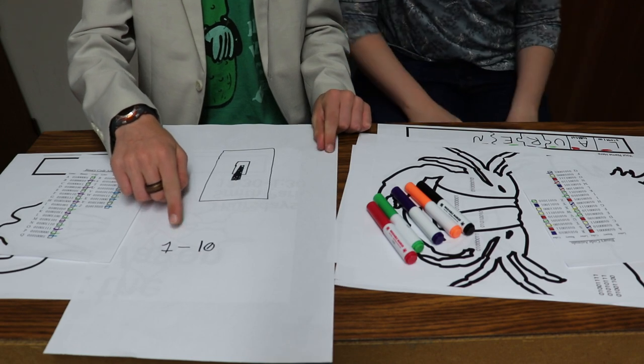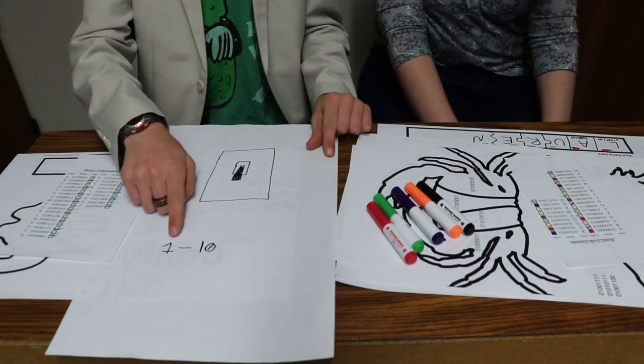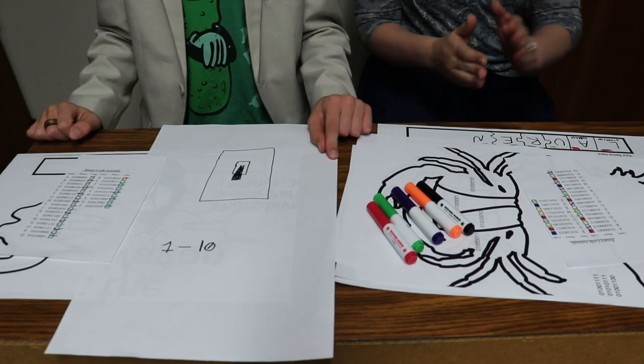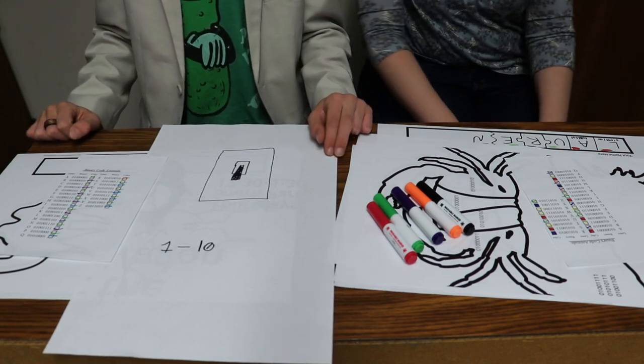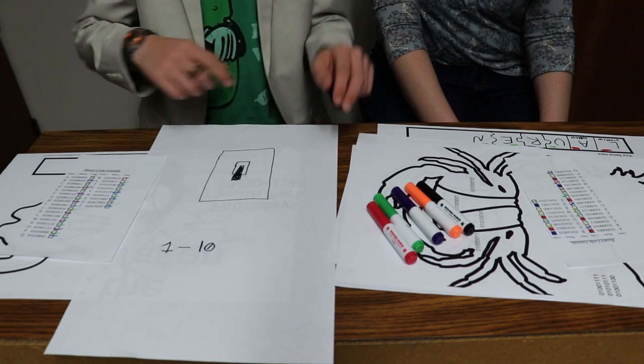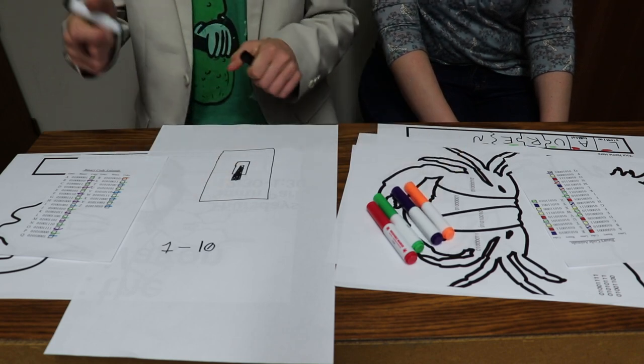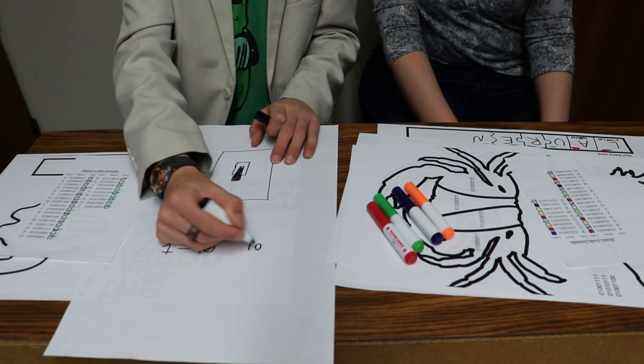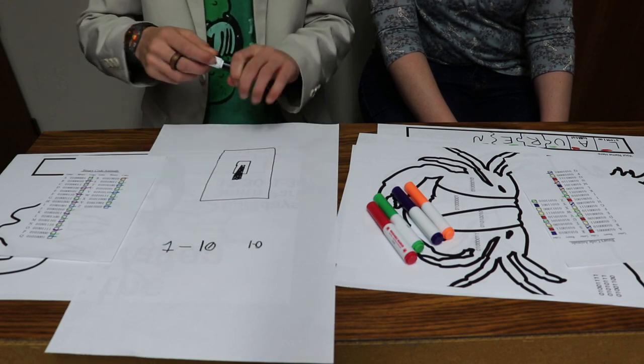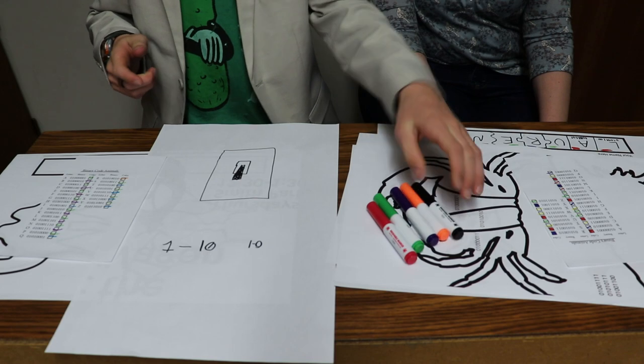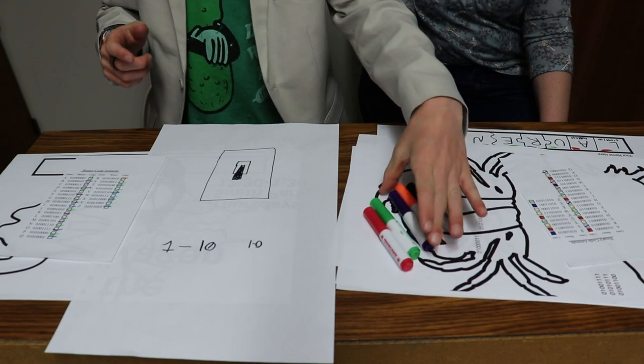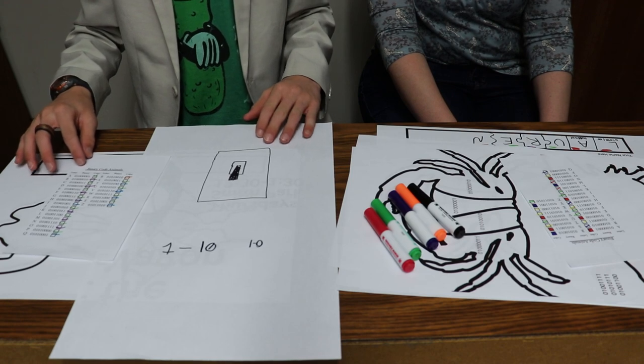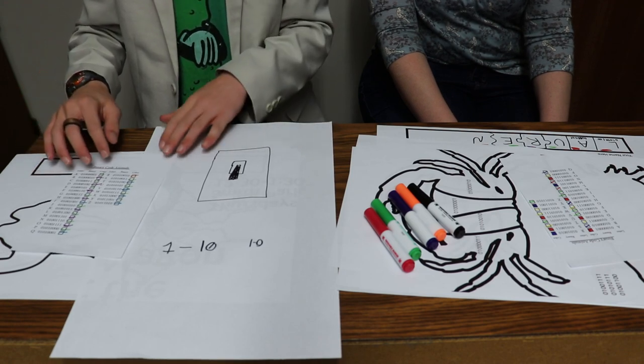All right, let's get started. So the way computers count is different from the way we count. What we call the way we count is base ten because we go from one to ten and then we keep going in tens. Computers only write in ones and zeros rather than one through ten.